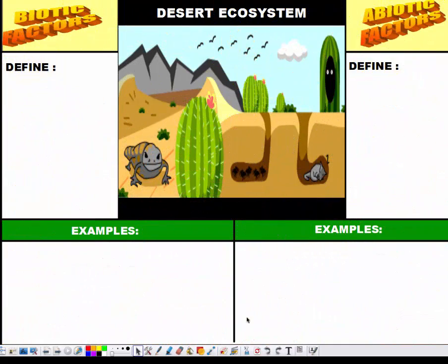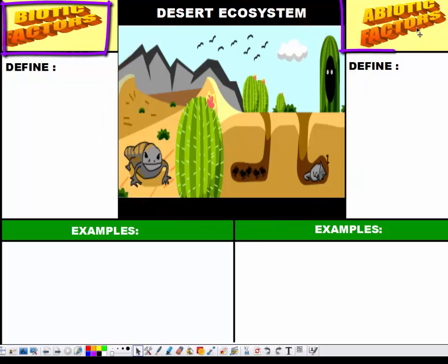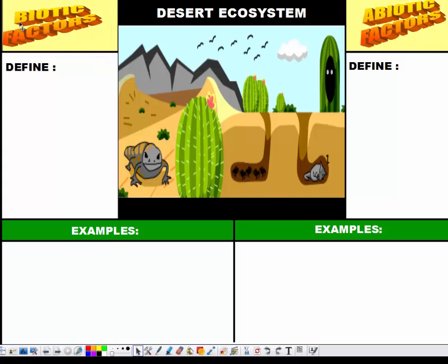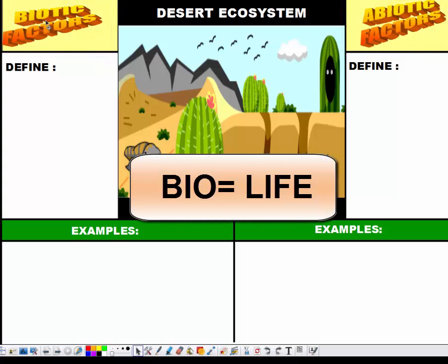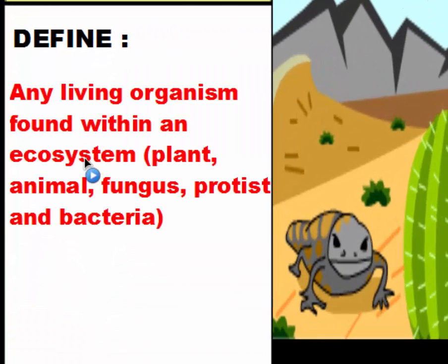When you take a look at an ecosystem such as a desert ecosystem as we have pictured here, there are two main groups of factors that you have to be aware of. You have what are called biotic factors and you have abiotic factors. One way to remember the difference between the two is the term 'bio.' Bio usually means living, and these factors refer to what's living and what's non-living in an area. Biotic factors by definition are any living organisms found within an ecosystem, and these can include plants, animals, fungus, protists, and bacteria.